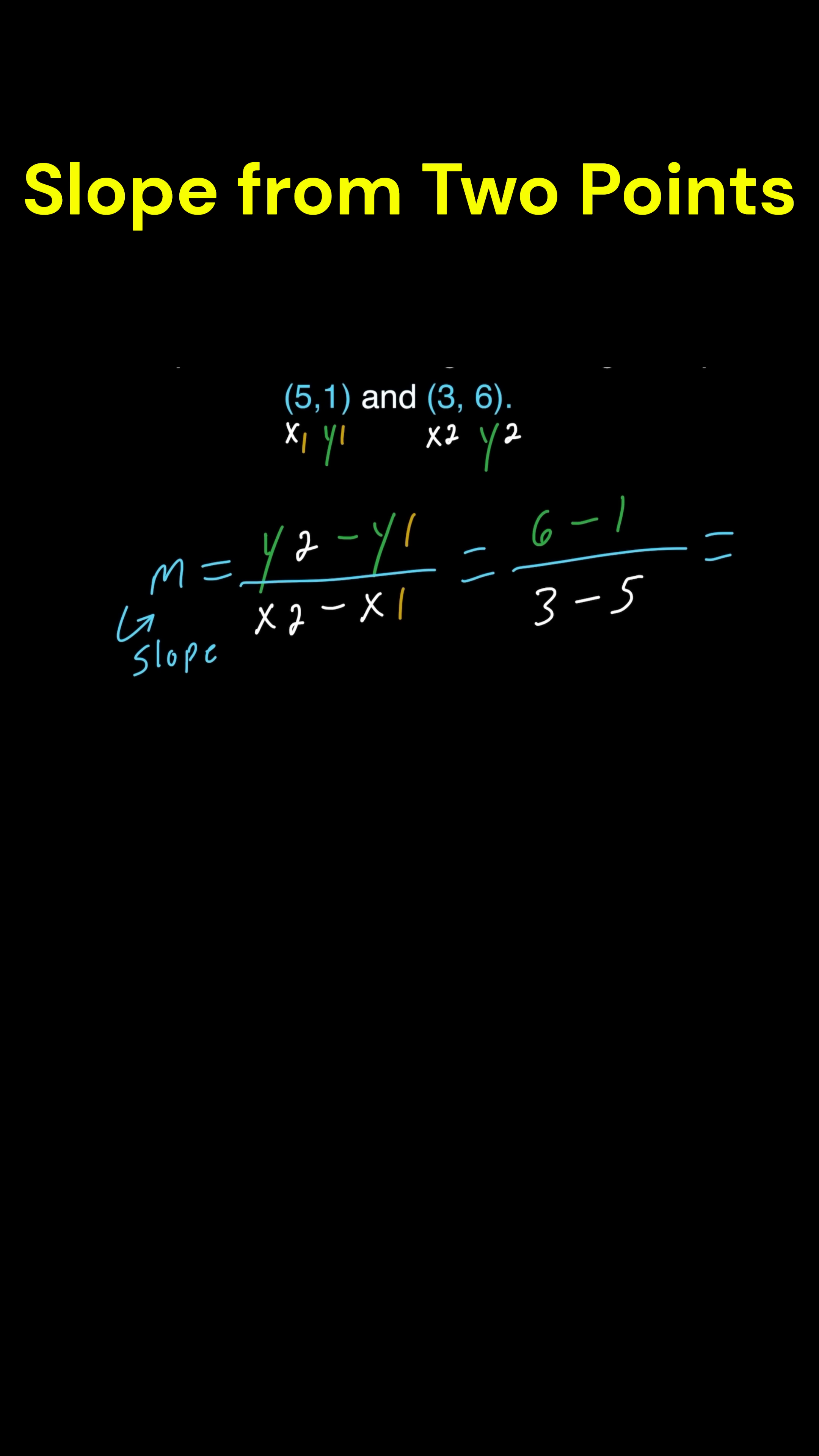Well, 6 minus 1 equals 5 over, and then what is 3 minus 5? This is going to equal negative 2. So we can rewrite this as m equals negative 5 halves.